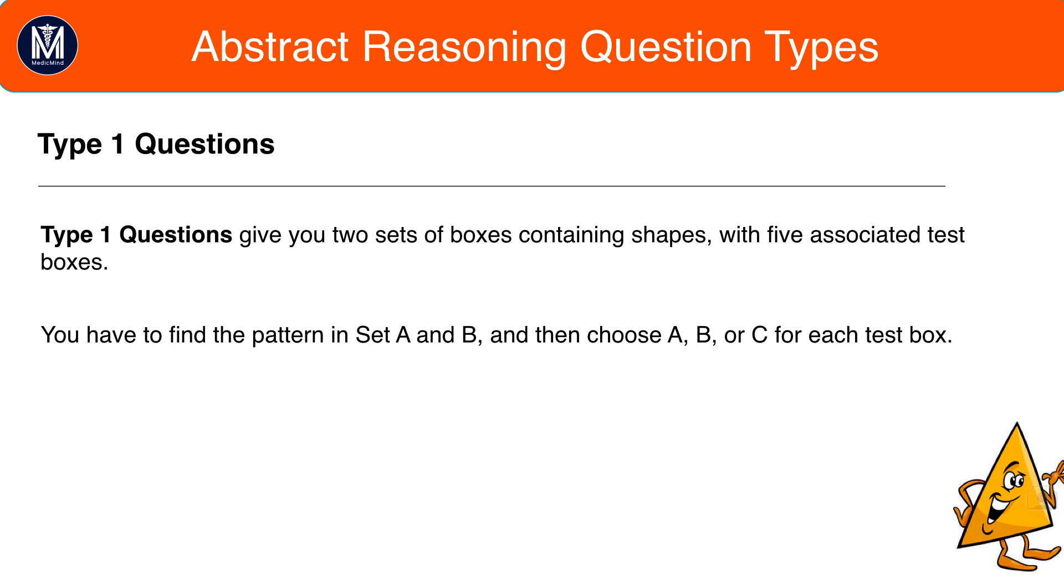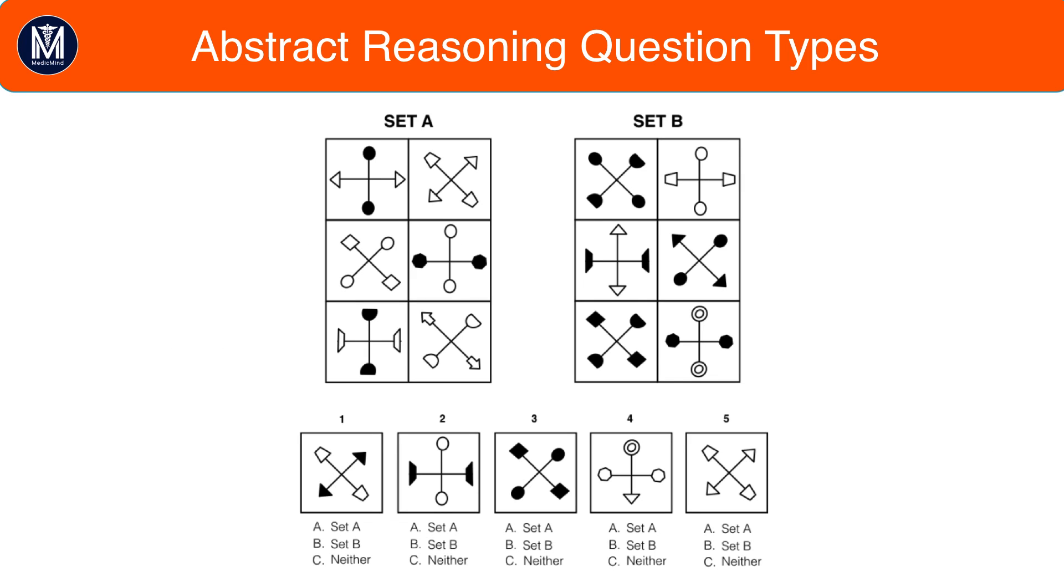Type 1 questions are by far the most common. Remember, in tutorial 1, we said that you have 13 minutes to answer 55 questions. Although at first this might sound really scary, it is easier than this. For type 1 questions, once you've spotted the pattern for set A and set B, you have five questions associated with them, which are pretty easy to answer once you have the pattern. Type 1 questions give you two sets, set A and set B. Set A has one rule between all six boxes, and set B has another rule between all six boxes. All the boxes in set A have to fulfill the rule, bar none. And same for set B.